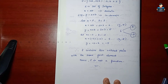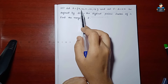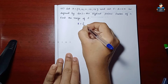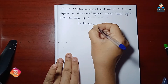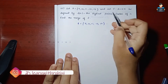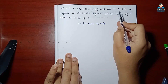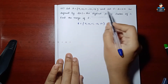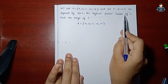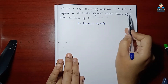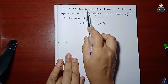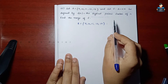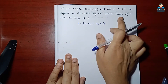Now the next is the 12th sum. Let A = {9, 10, 11, 12, 13} and let f be a function from A to N defined by f(n) = the highest prime factor of n. Find the range of f.